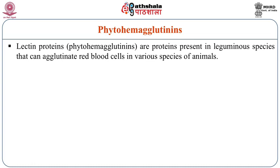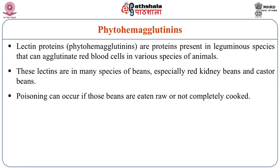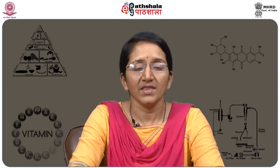Phytohemagglutinins are lectin proteins present in leguminous species that can agglutinate the red blood cells in various animal species. These lectins are found in many species of beans, especially red kidney beans and castor beans. Poisoning can occur if those beans are consumed in raw form rather than cooked form.